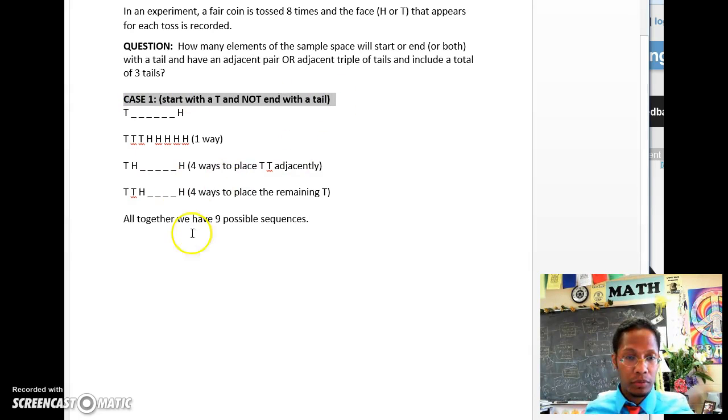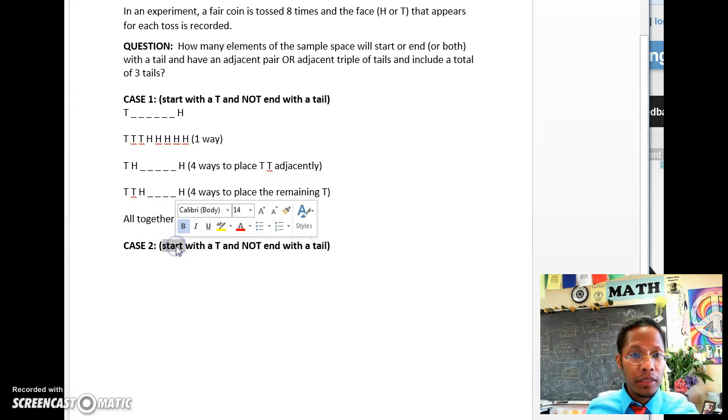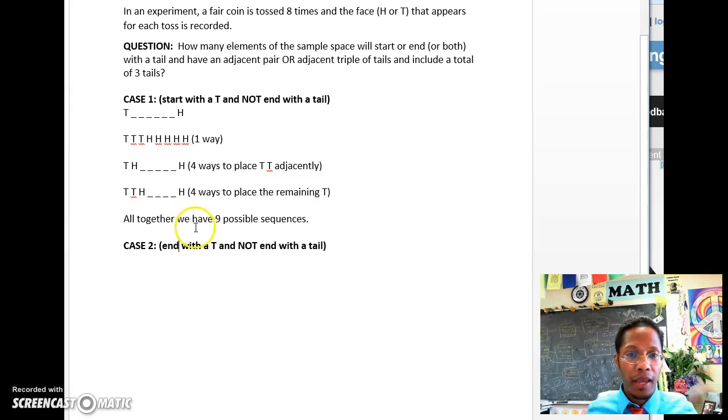Case two would be if we end with a T and not start with a T. So if we're not starting with a T, then we're starting with an H. And then there are seven slots, and we're ending with a T. So we're counting all the ways that look like that.